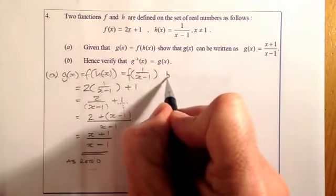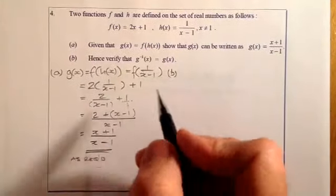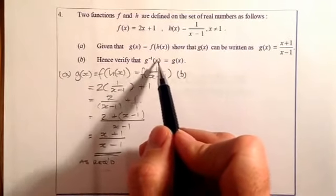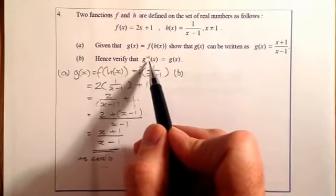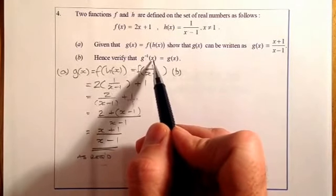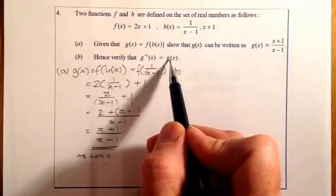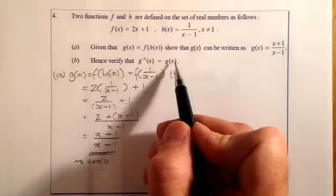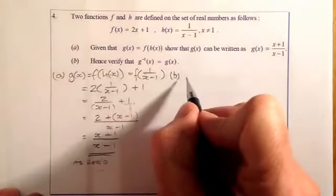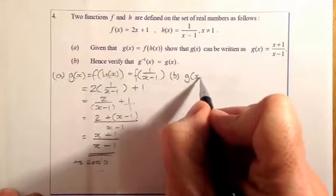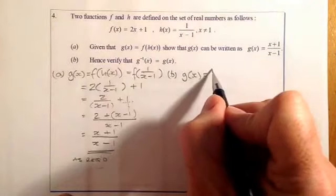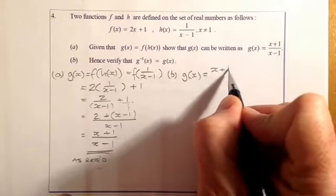Part b: hence, after I've done this part, I have to verify that the inverse function g to the minus 1 x is equal to g of x. So let's go ahead and work that out. We'll start with g of x first, because I already know that. The g of x function is the one I just worked out in part a.